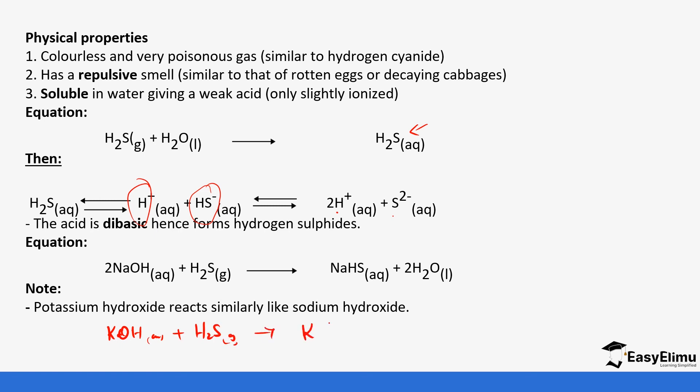If you were to write the equation, it would be potassium hydroxide plus hydrogen sulfide to form potassium hydrogen sulfide plus water. The balancing would be the same since they are in the same group as sodium hydroxide.